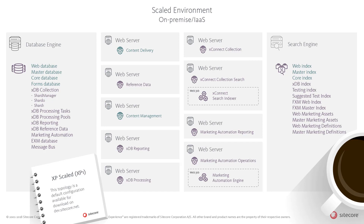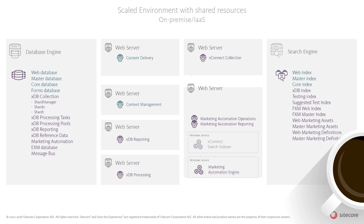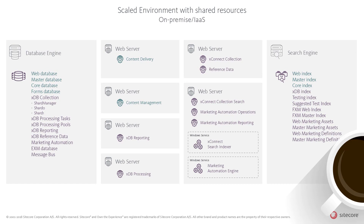The Sitecore Experience Platform architecture caters for many business scenarios and offers enormous flexibility in deployments. It is important that you consider your requirements and resources available before planning out how to combine roles in single application pools, grouping roles on single servers, or split up roles across servers. Therefore, the default XP Scaled Sitecore Installation Framework configurations is a good starting point for your specific deployment tailored to your specific business needs. In your on-premise setup, you could, for example, replicate the way the Azure ARM templates has grouped roles and thereby reduce the number of server resources needed.